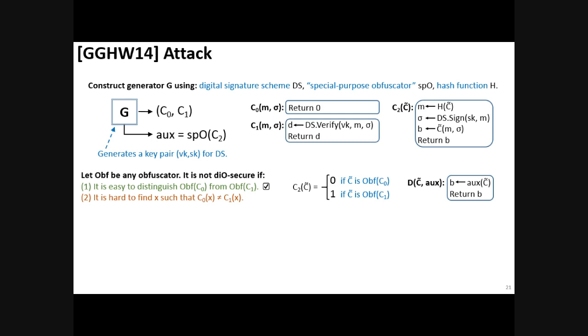You can see that if you feed an obfuscation of C0 into C2, then it always returns 0, whereas if you feed an obfuscation of C1, it always returns 1. And so, trivially, you can build a distinguisher that tells apart an obfuscation of C0 from obfuscation of C1.